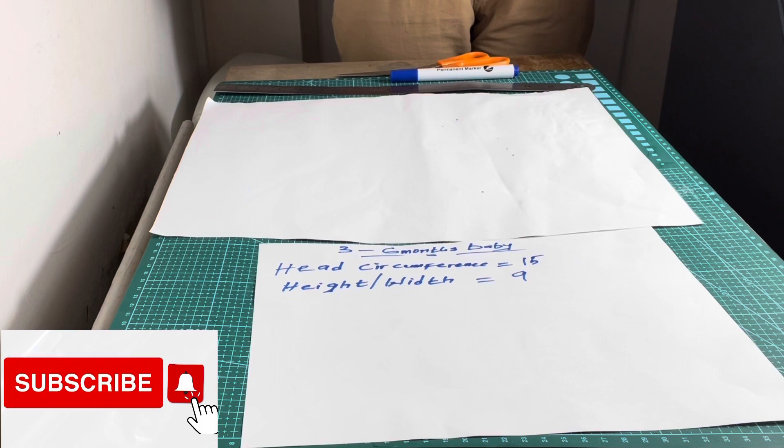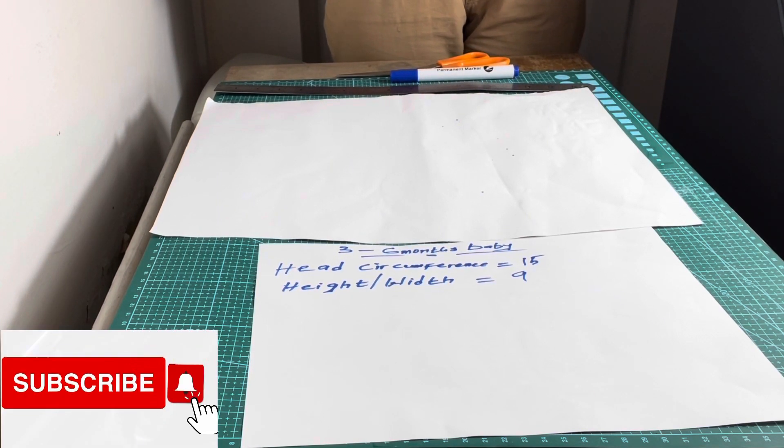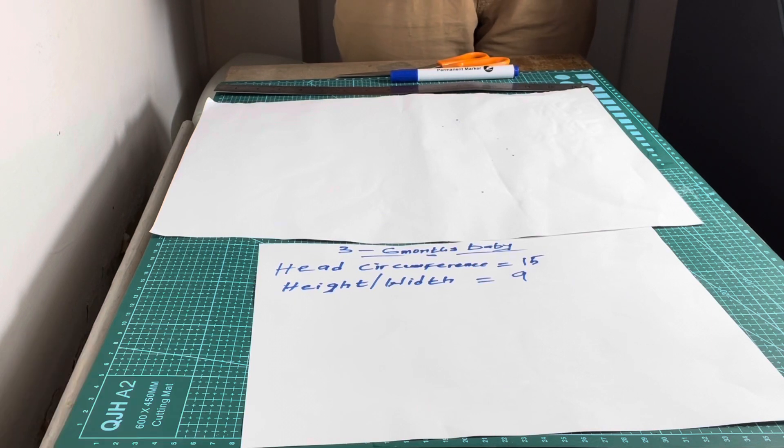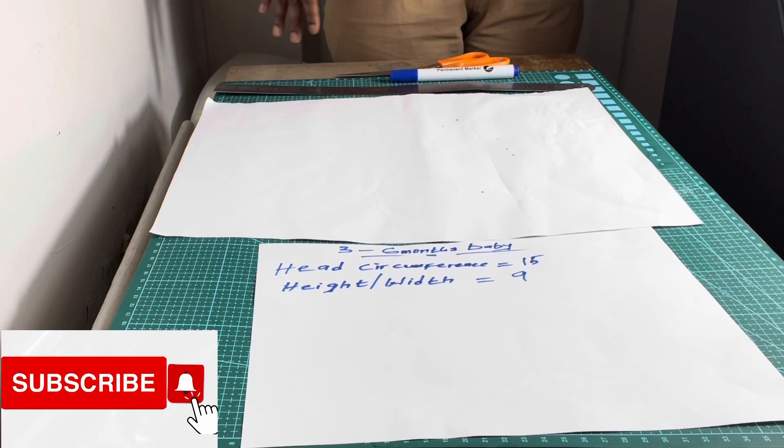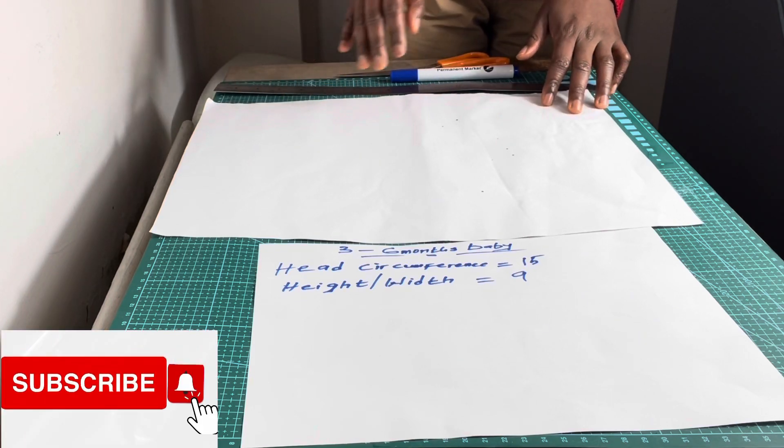In today's video, I'm going to be showing you how to draft a pattern for a three to six month old baby. This pattern can be used for your turban. On my table I have all the materials I'll be working with: a pair of scissors, marker, ruler, and pattern paper.